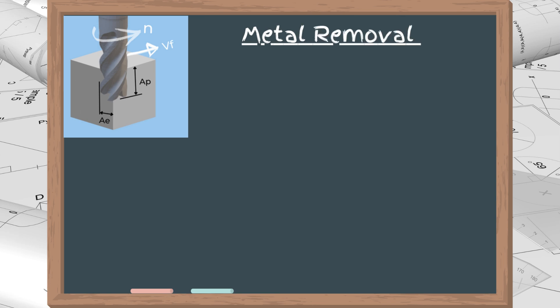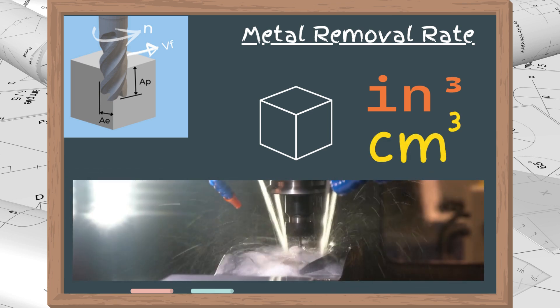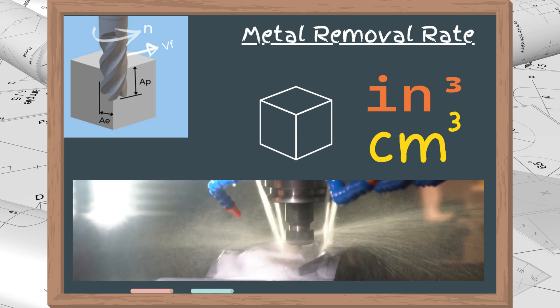The next formula we will study is for metal removal rate, or MRR, as it is usually called. MRR is measured in cubic inches or cubic centimeters per minute and indicates how much material is machined in one minute under a set of cutting conditions.